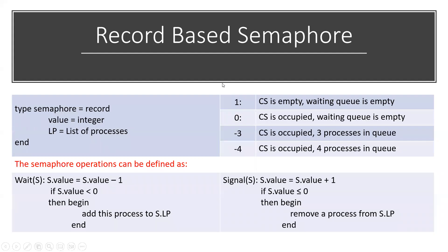In this tutorial we have a record-based structure. We will call the semaphore operation using this structure. If we look at the record-based structure, we define it as: type semaphore as a record. Inside this record, we have an integer variable called value, and we have a list of processes which we call Q — referred to as LP, the list of processes.